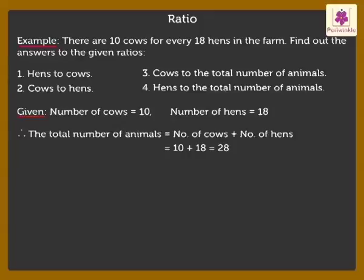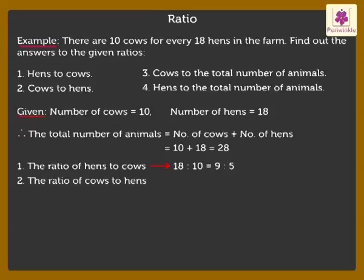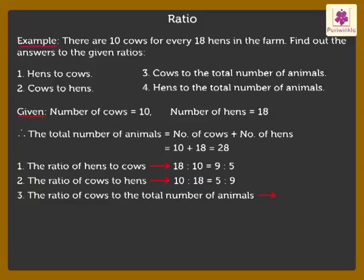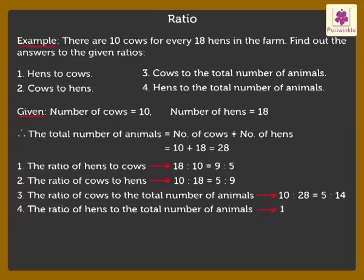The required ratios are: 1. The ratio of hens to cows is 18 is to 10, which is equal to 9 is to 5. 2. The ratio of cows to hens is 10 is to 18, which is equal to 5 is to 9. 3. The ratio of cows to the total number of animals is 10 is to 28, which is equal to 5 is to 14. 4. The ratio of hens to the total number of animals is 18 is to 28, which is equal to 9 is to 14.